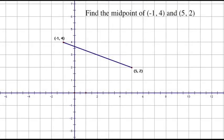Let's now have a look at an example. The question is asking find the midpoint of (-1, 4) and (5, 2). Now X1 is -1 and X2 is 5. Y1 is 4 and Y2 is 2. Using the formula X equals (X1 plus X2) over 2 gives us (-1 plus 5) over 2 which is 4 over 2 which equals 2.